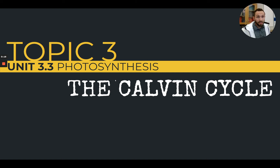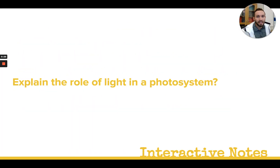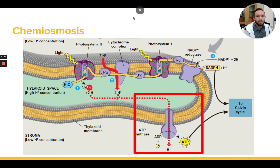In topic two, we talked about the light reactions or the light dependent reactions, which take place in the thylakoid. In those reactions, we ended up making NADPH, which carries high energy electrons that were energized by the photosystems and ultimately came from water. We also made some oxygen and some ATP during the light dependent reactions. The NADPH and the ATP are going to move on to the Calvin cycle — we're going to see now in topic three why those were needed.